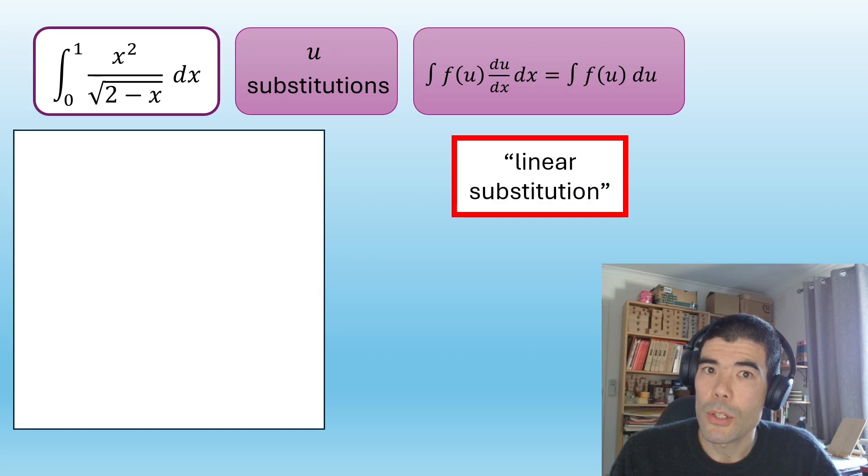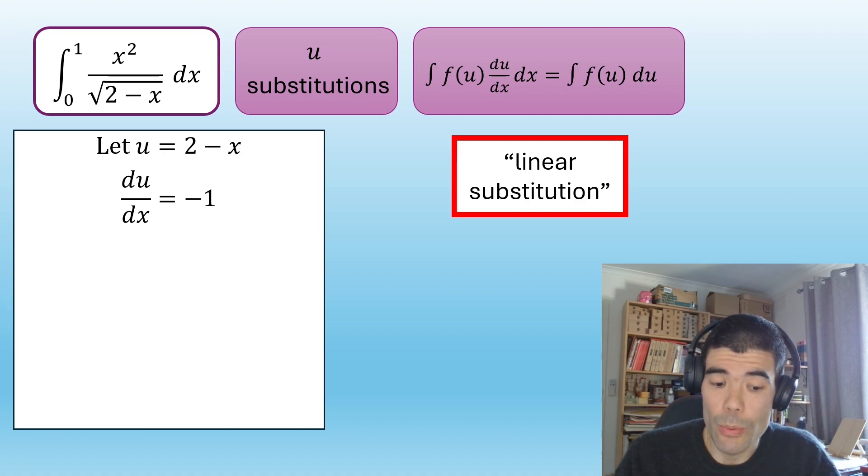All right, the next type of u-substitution is slightly different, called a linear substitution, where our u is going to be linear. So if we have a look at this example, what we want to do is let u equal 2 minus x. That's really good because the derivative is just going to be, in this case, negative 1. And we can always introduce any constant we'd like into our integral just by multiplying it in and making sure we adjust from on the outside. So what we're going to do with this x squared on the top then is rewrite that in terms of u. We can easily do that because u is 2 minus x. So x is going to be 2 minus u.